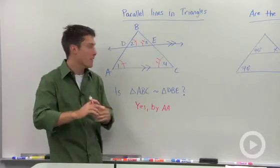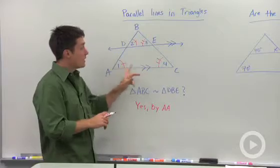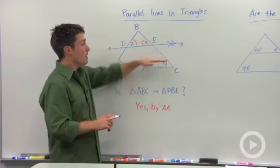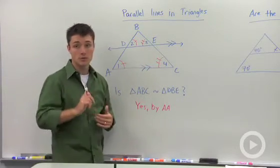In another way of saying that, if these two angles are congruent, and if these two angles are congruent, then you must have parallel lines, and you must have two similar triangles.